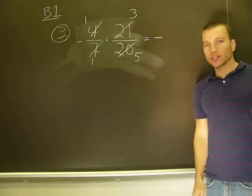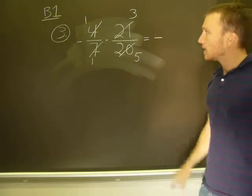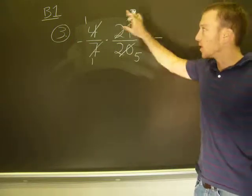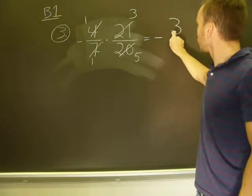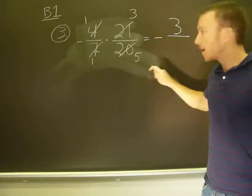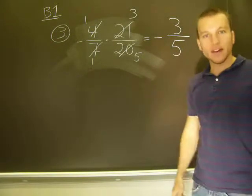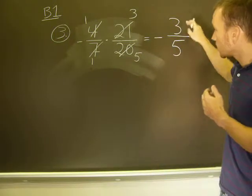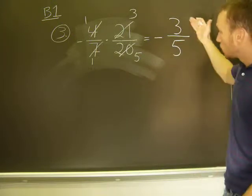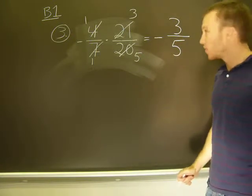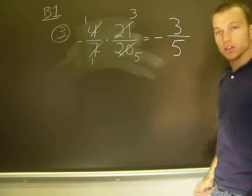So I can start there. I know my answer will be negative. Now I can just multiply the numerators: 1 times 3 is 3, 1 times 5 is 5. And I always want to check just to make sure I didn't miss some reduction. See if 3 fifths will reduce any further, and I know there's no common factor between those two.